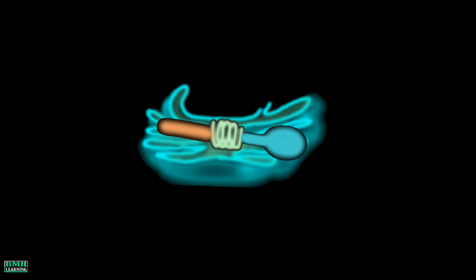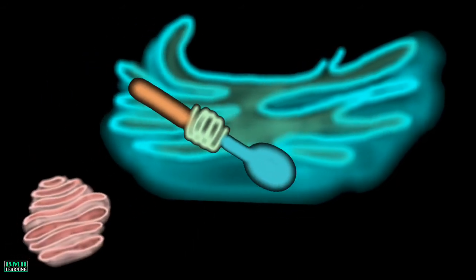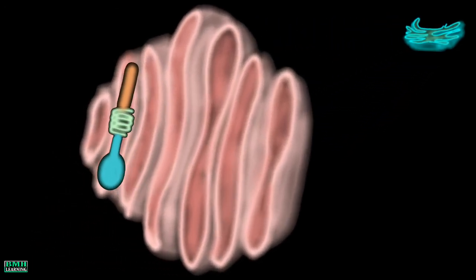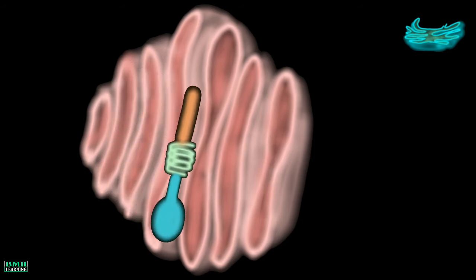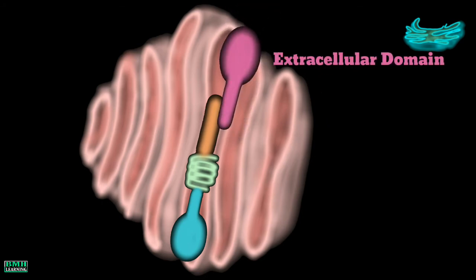Notch receptor is synthesized and processed as a monomeric transmembrane protein in the ER of the receiving cell. The protein then moves to the Golgi apparatus for further editing and processing, or simply for its maturation. Here in the Golgi, it undergoes a proteolytic cleavage which results in the formation of an extracellular subunit plus a cytosolic transmembrane subunit. But until ligand binding, the two subunits remain non-covalently attached to each other.